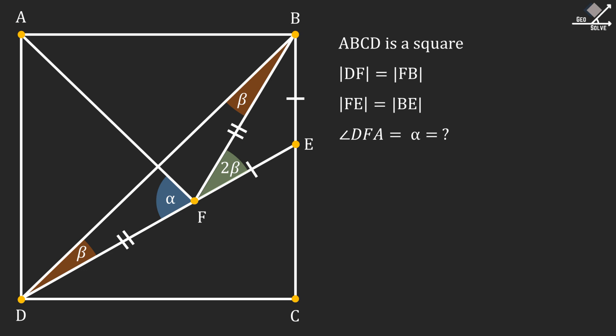Triangle FEB is also an isosceles triangle. So angle FBE should also be 2 beta. Since line segment DB is a diagonal of the square, this angle is 45 degrees. And that means beta plus 2 beta is 45 degrees. From here we can find beta as 15 degrees.